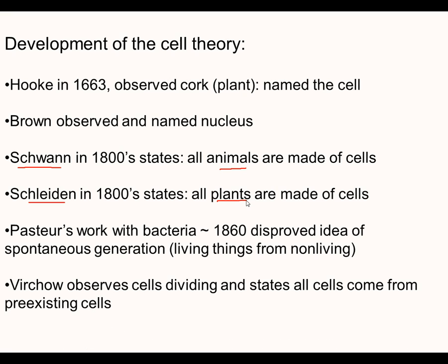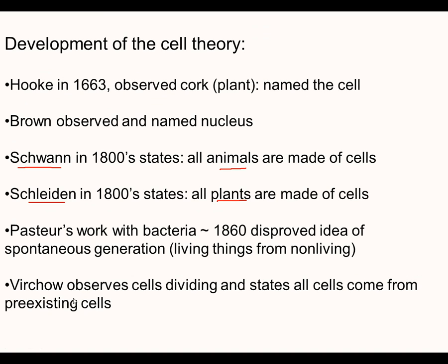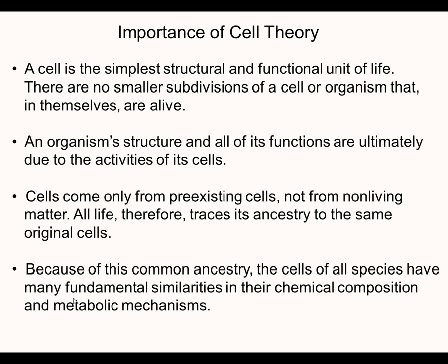Another scientist was by the name of Virchow. Virchow was looking at cells that were going through cellular division or mitosis, and he stated that all cells come from pre-existing cells. He observed these cells and noticed that they were dividing and multiplying — one cell had to come from another cell, they just didn't show up. He backed up the idea of what Pasteur was talking about with his information.